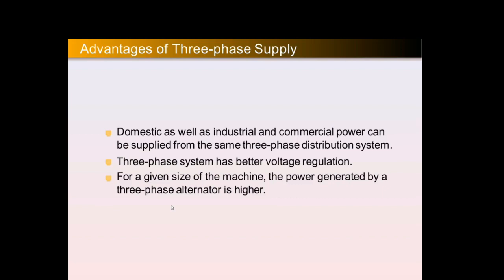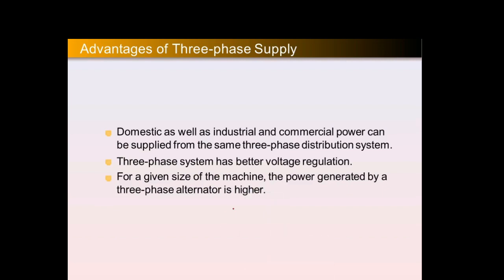For a given machine size, the power generated by a three-phase alternator is very high. An alternator is a generator — it generates electrical energy from mechanical energy. For the same size, a single-phase generator will generate very low power, whereas a three-phase alternator will generate a high amount of power. This is one more advantage related to generation.